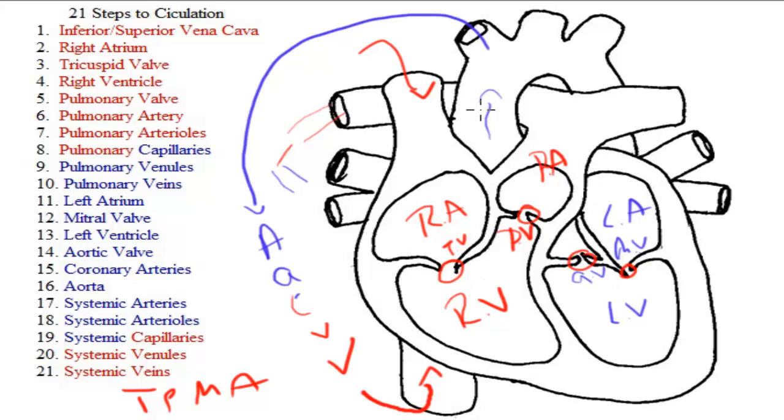And lastly, if I was going to take a test on the 21 steps of circulation, at the top of my paper I would write R-L-L-S, because the blood goes through the right side of the heart, into the lungs, back into the left side of the heart, and out into the systemic circulation: right, lungs, left, systemic.